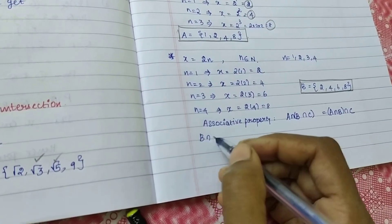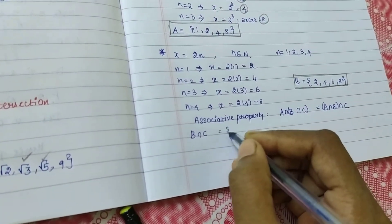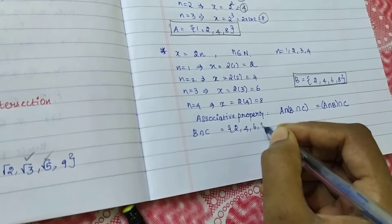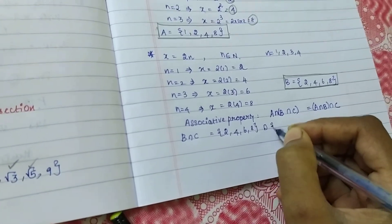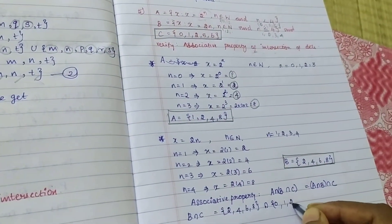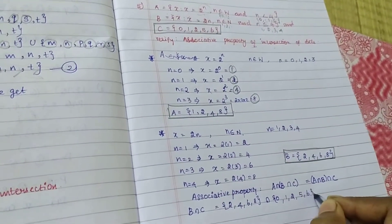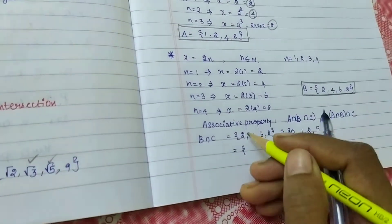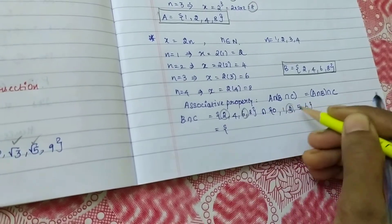B intersection C, the previous sum how we did. So, B is 2, 4, 6, 8. Intersection, what is the C value? 0, 1, 2, 5, 6. So, what are the common? 2, 6.